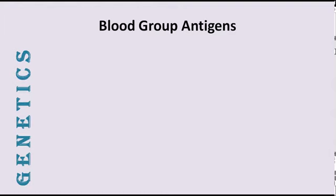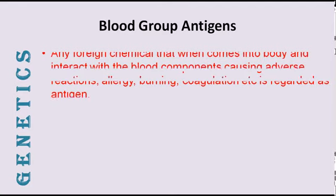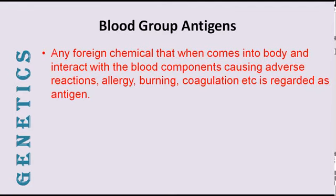Now, everyone knows that if some foreign object comes into our body, into our blood — especially nitrogenous substances and proteins — they interact with blood components, causing adverse reactions such as allergy, burning, coagulation, etc. These are commonly named as antigens. The allergy-causing substance is called allergen, and that which activates the immune system is called immunogen.